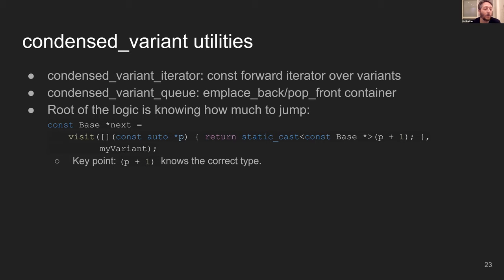Another useful implementation is a full container — not just an iterator — which is a queue. I can't really implement a vector because it's very hard to insert or delete items in the middle or do random access when every item has a different size. But a condensed variant queue gives me `emplace_back`, `push_back`, `pop_front`, and still keeps the nice property of everything being compact in memory, holding just as much information as I want.